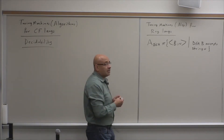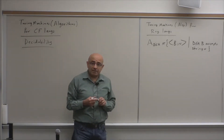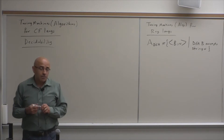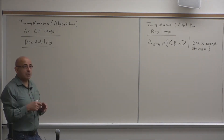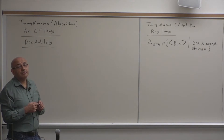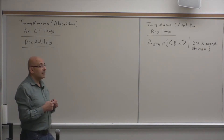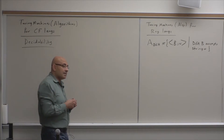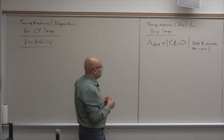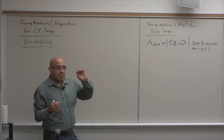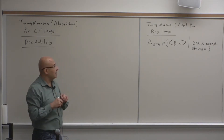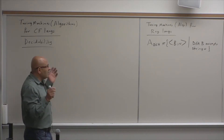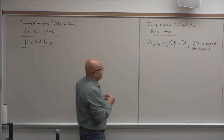A DFA can be implemented as a lookup table where each row corresponds to a state and each column corresponds to a symbol. For a pair of a state and a symbol, you make a transition. So you can easily implement a DFA.